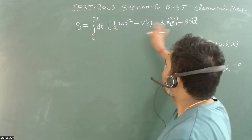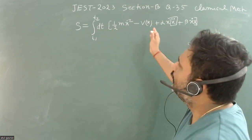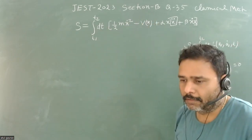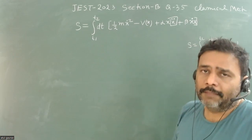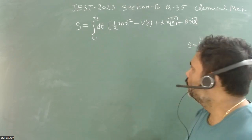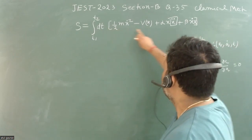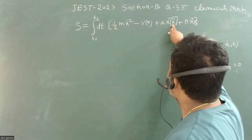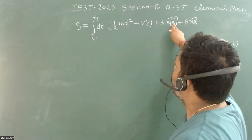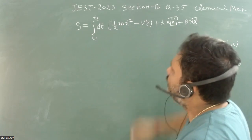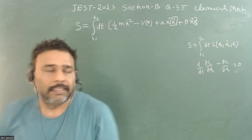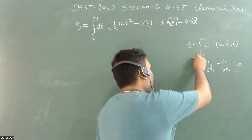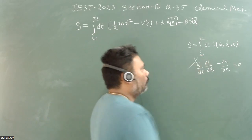Here, the same action is given and we need to find the equation of motion. But we have to be very careful: this particular Lagrangian L contains x-double-dot. So if it has x-double-dot, then obviously the standard Euler-Lagrange equation is not going to work.